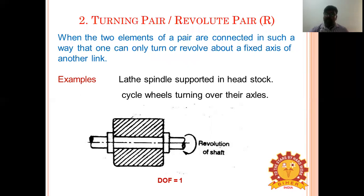A turning pair, also called a revolute pair or hinged pair, is when two elements are connected such that one revolves around the other. Examples include lathe spindle supported in a headstock, cycle wheels turning over their axles, and crankshaft in a journal bearing in an engine.